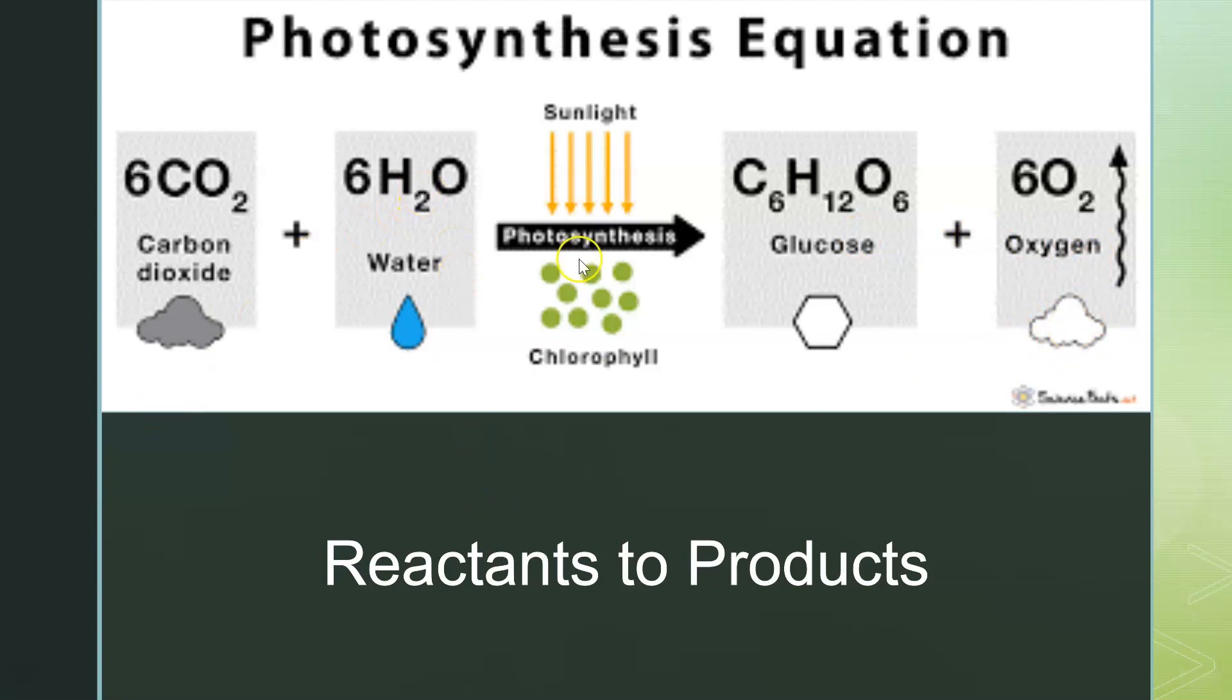Keep in mind, what's on the left-hand side of the arrow are the reactants. They're the ones that go and start the equation. The products are the end results of the equation, and they're on this side of the arrow. So the carbon dioxide and the water are the reactants. The glucose, the sugar, and the oxygen are the products.